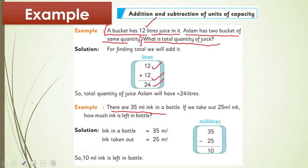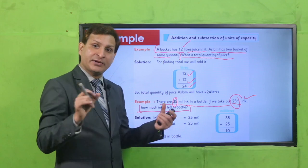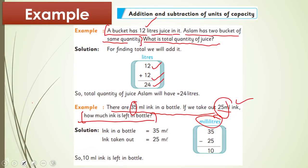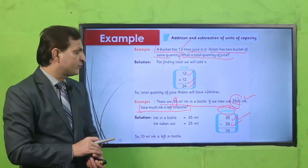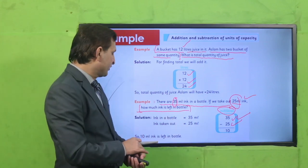The next example: There are 35 ml of ink in a bottle. If we take out 25 ml, how much ink is left in the bottle? When you have to find what is remaining, it means you have to do subtraction. Using the same units — milliliters — subtract 25 from 35, and 10 milliliters remain in the ink bottle.